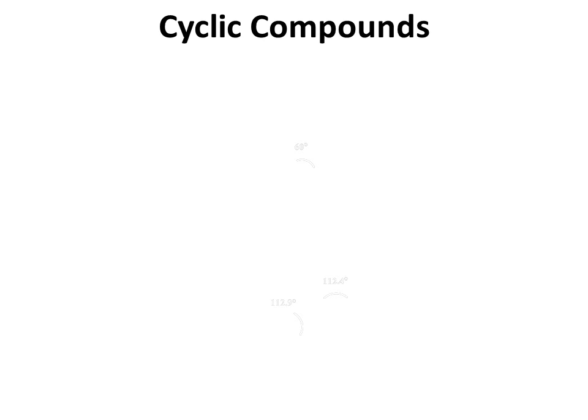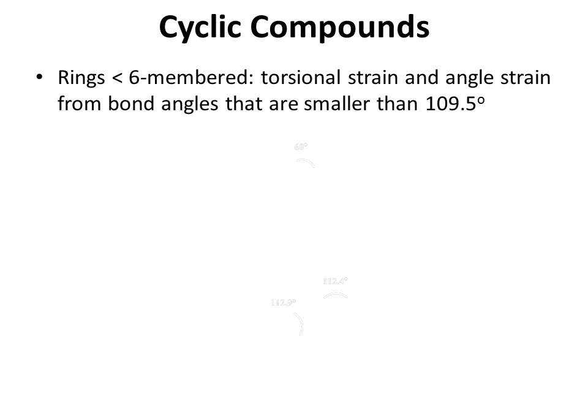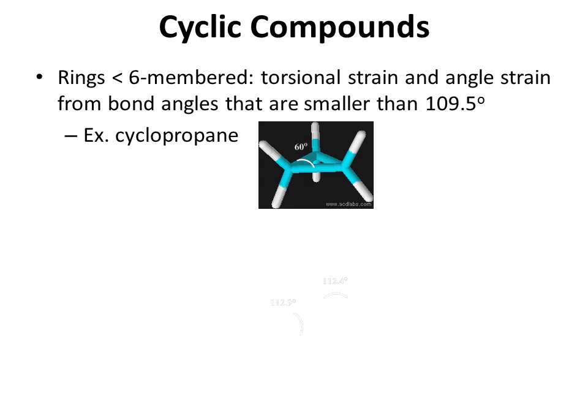Now that we've seen how rings can be used for designing conformationally constrained compounds, let's look at cyclic compounds in general. When rings are less than six-membered, you get torsional strain and angle strain from bond angles that are smaller than 109.5 degrees. For example, in cyclopropane, the torsional strain comes from the fact that all of the CH bonds on the top and bottom are overlapping — they're all eclipsed.